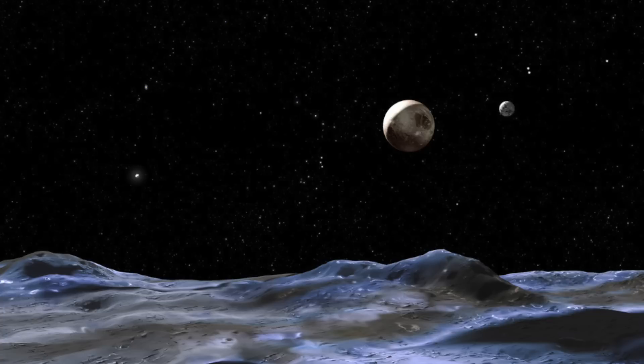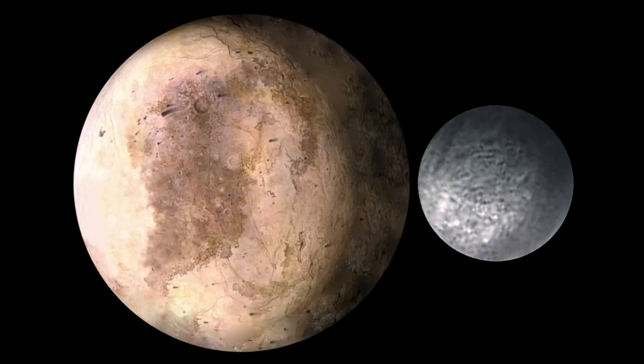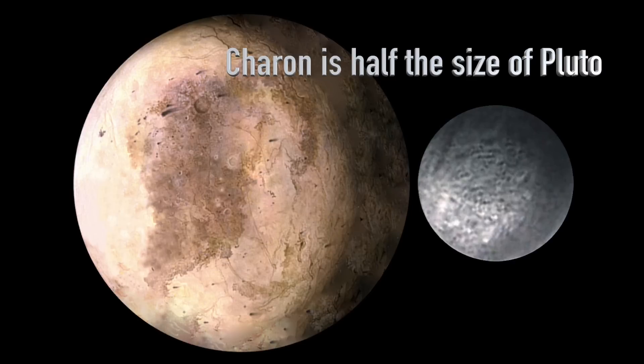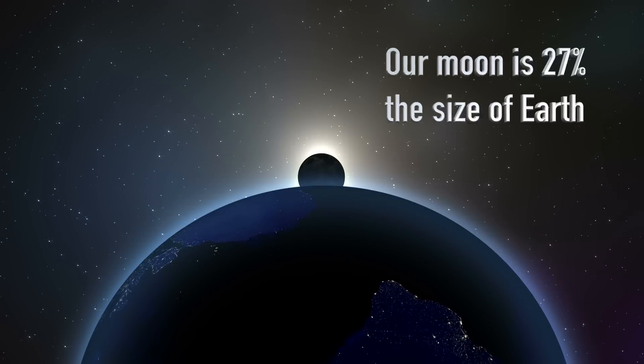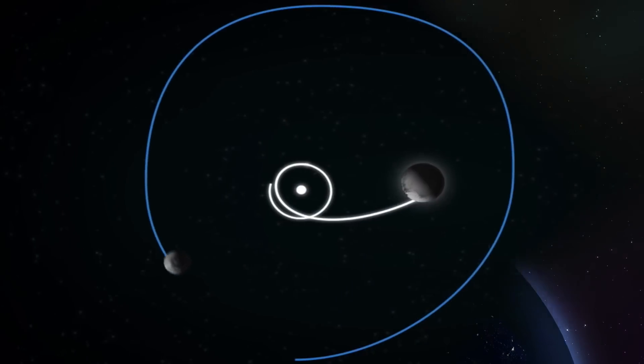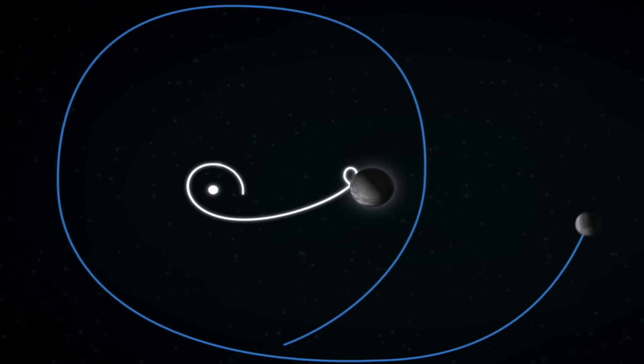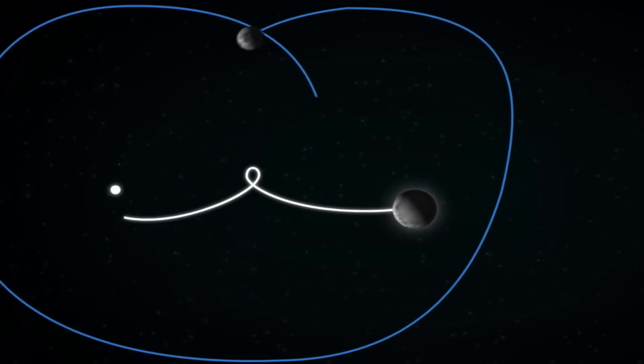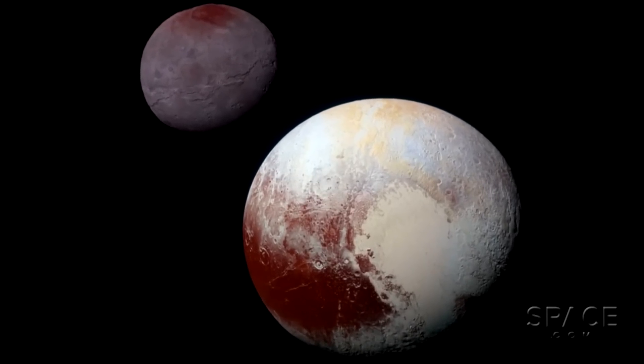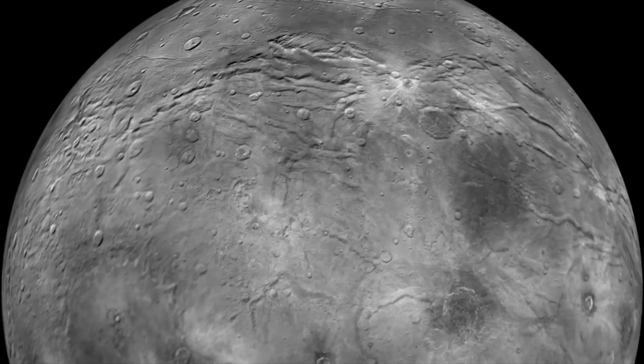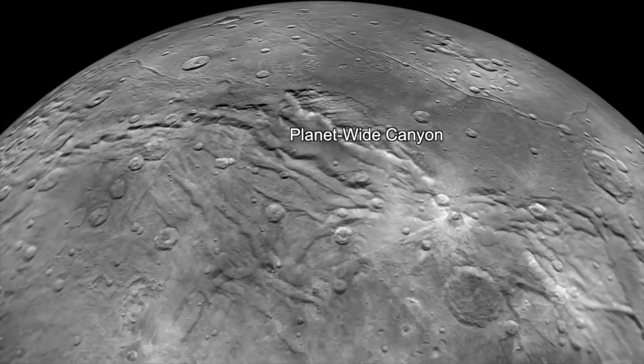In relation to moons and their host planets, Charon is the largest, coming in at half the size of Pluto, an impressive girth considering our moon is only 27% the size of Earth. Though currently considered a moon, since there is no true orbit of either object around the other, the International Astronomical Union has stated that considering Charon a dwarf planet is not an impossibility in the future.